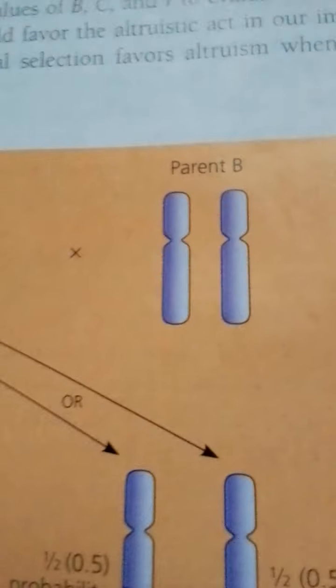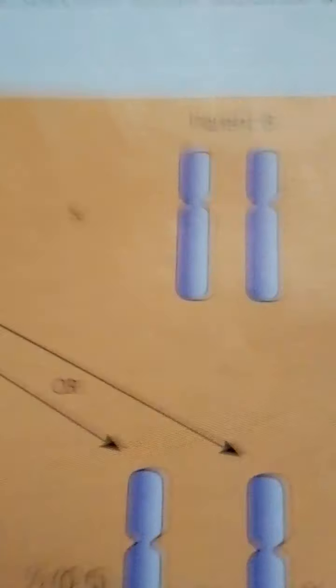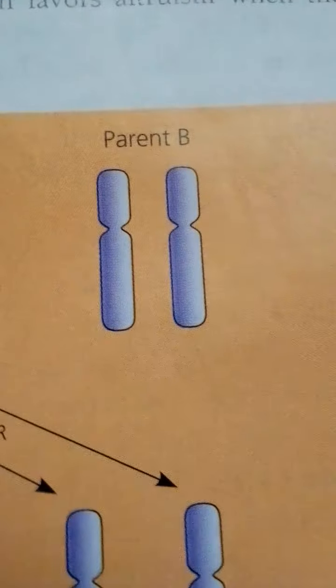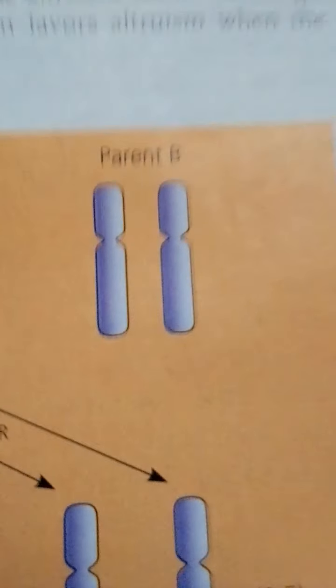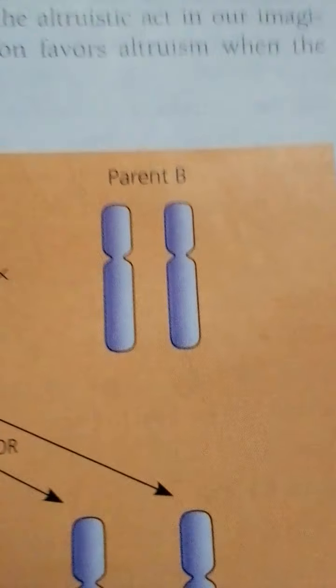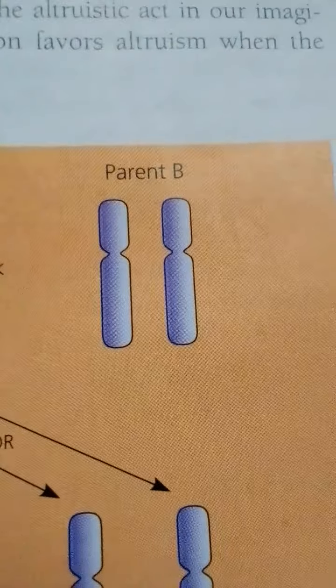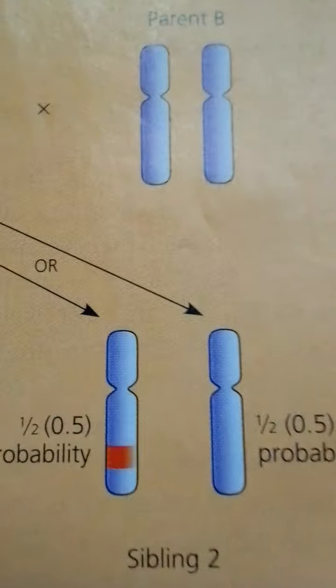With two siblings who are not identical twins, there is a 50 percent chance that a gene in one sibling will also be present in the other, so R equals 0.5. One way to see this is in terms of the segregation of homologous chromosomes that occurs during meiosis, as shown in this figure.